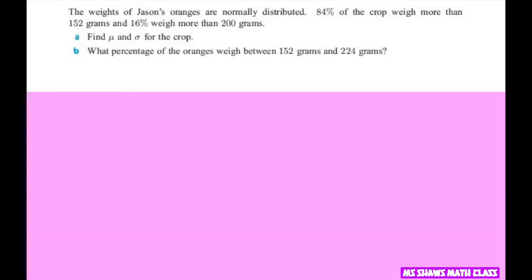Hi everyone. The weights of Jason's oranges are normally distributed. 84% of the crop weigh more than 152 grams and 16% weigh more than 200 grams.